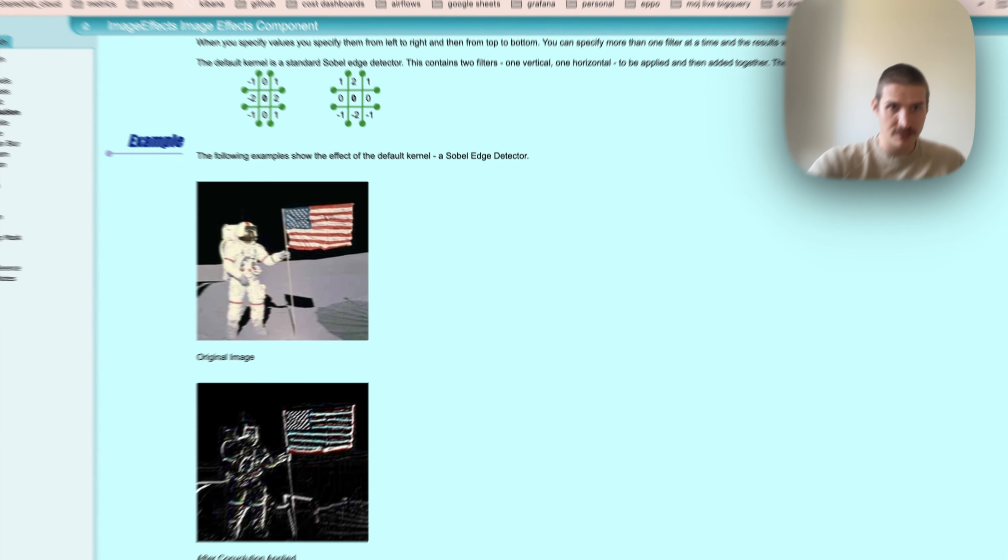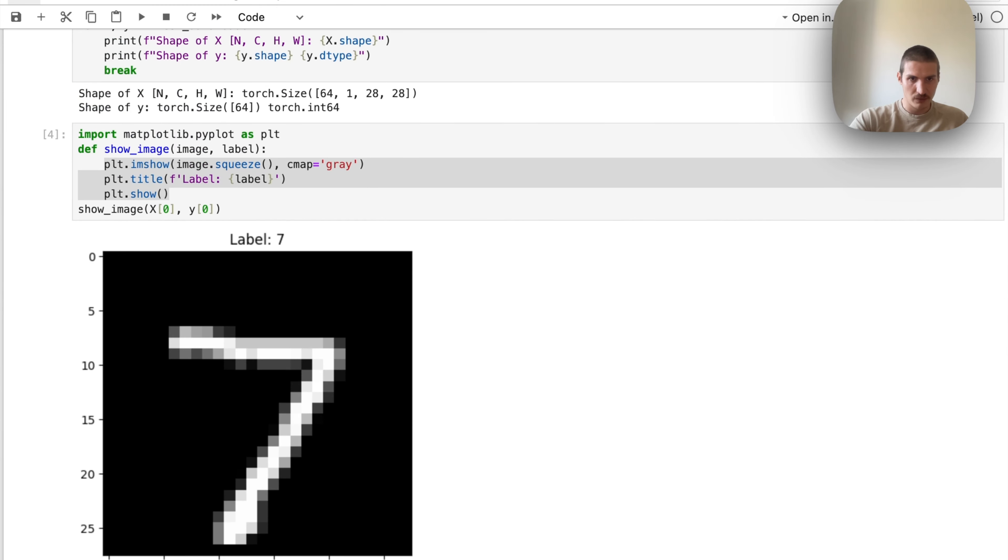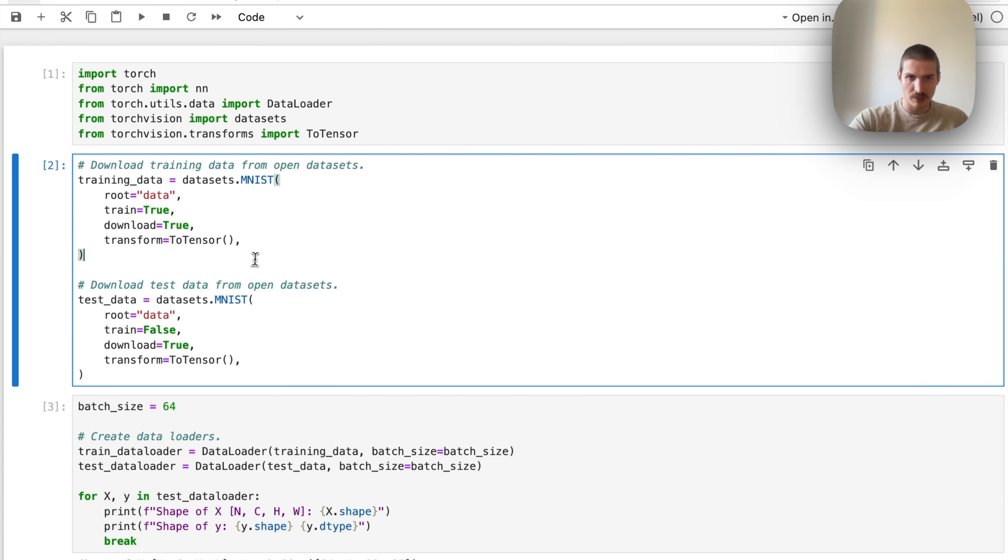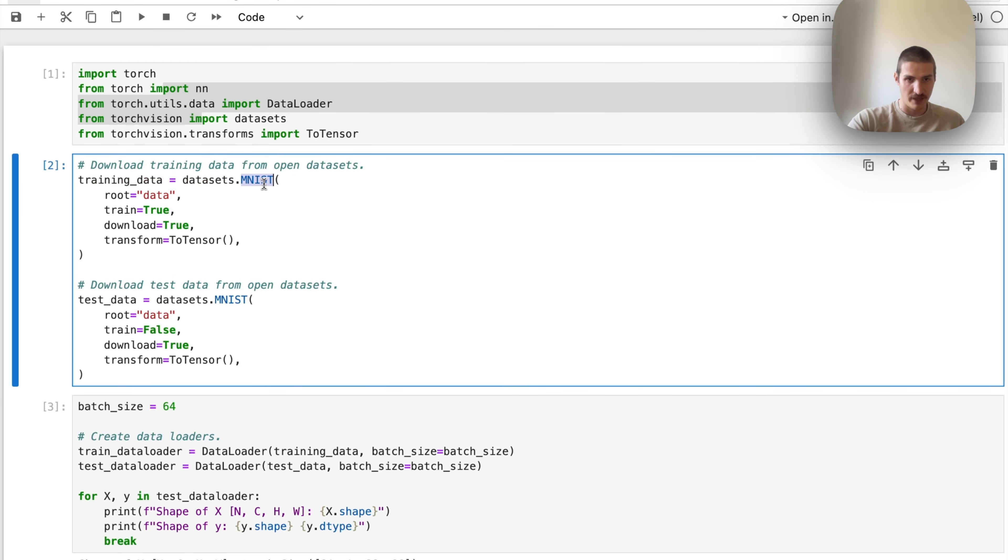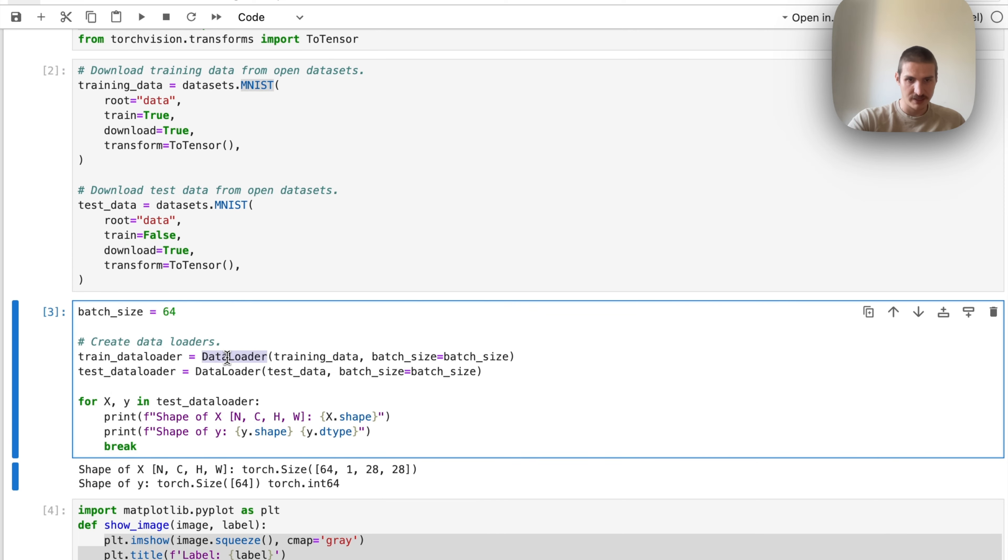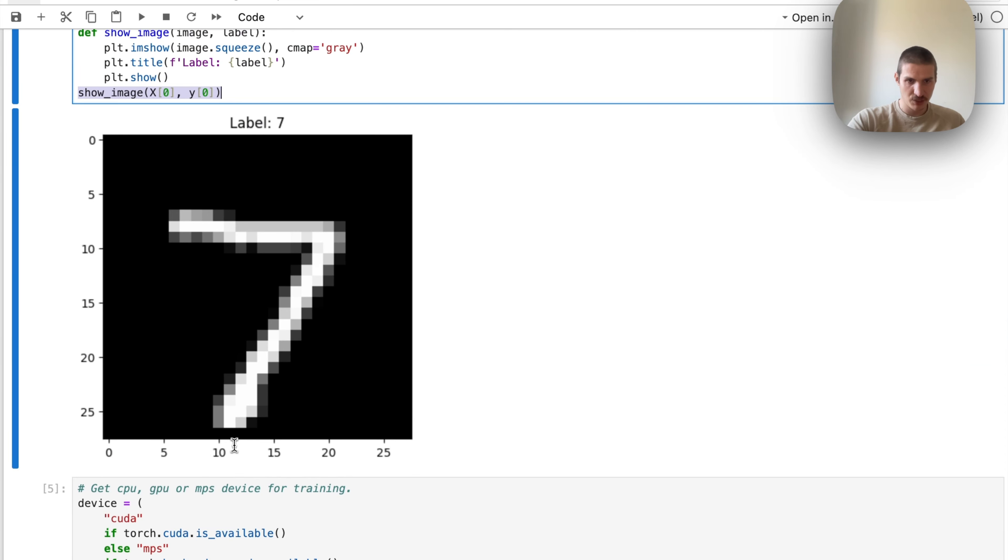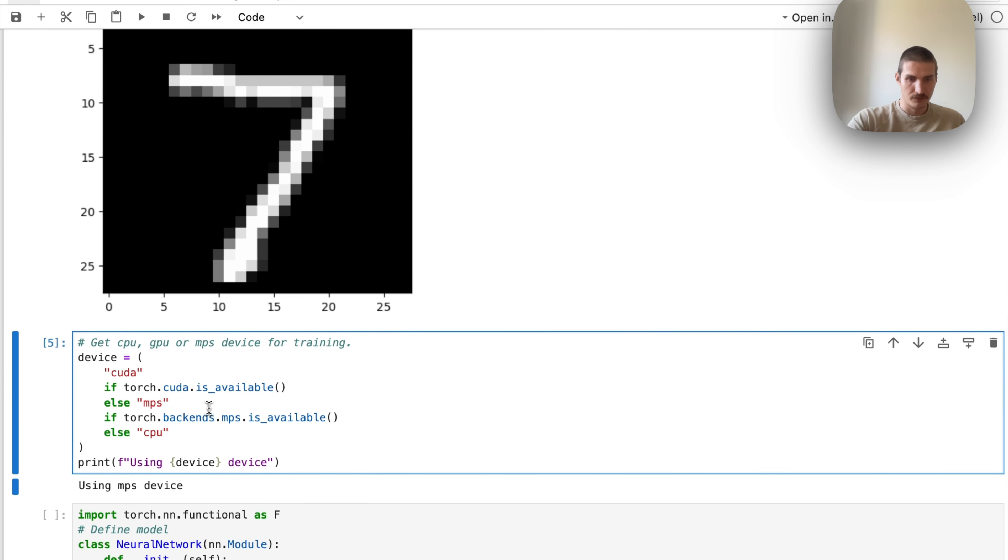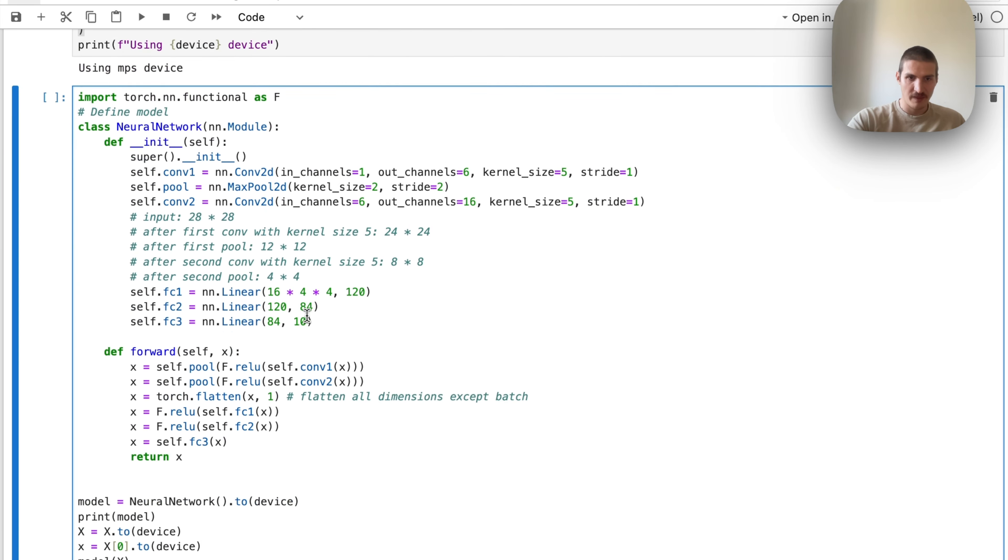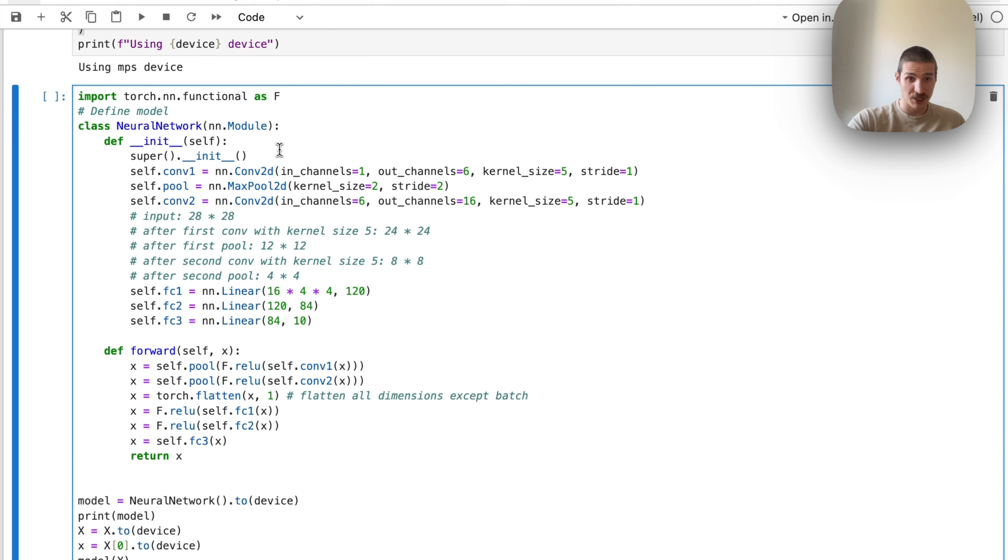Now let's do some coding. So I'm still going to show it on the digits MNIST dataset. So right now we are looking at the same code that we had before. So we're just importing some libraries, we are loading the MNIST data, we are defining the data loader. This is how we can take a look at the actual image. And then take care of the devices.